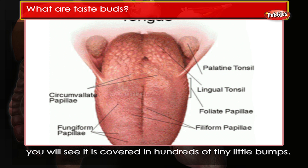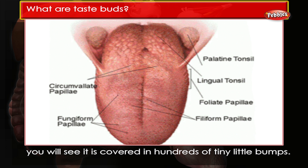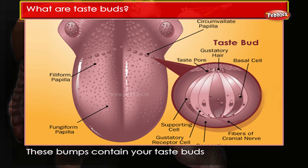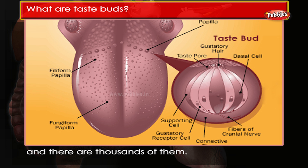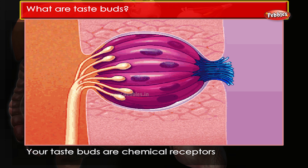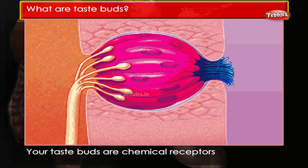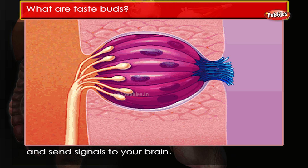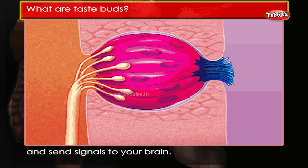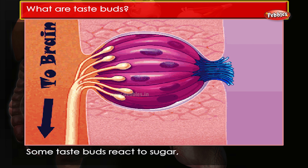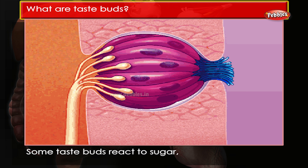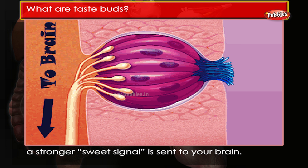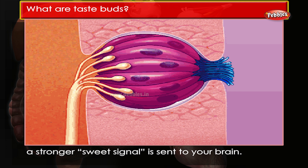What are taste buds? If you look closely at your tongue you will see it is covered in hundreds of tiny little bumps. These bumps contain your taste buds, and there are thousands of them. Your taste buds are chemical receptors that sense the different chemicals in your food and send signals to your brain. Some taste buds react to sugar, so the more sugar a food contains, the stronger a sweet signal is sent to your brain.